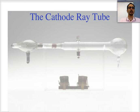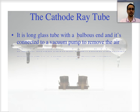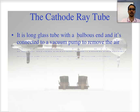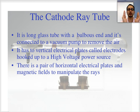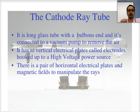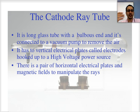The cathode ray tube is just a long piece of glass tube connected to a vacuum pump to remove all the air inside. It has a bulbous end that goes wider, so you have space to see what's happening. It has electrical plates that are vertical, called electrodes, which produce the cathode rays when connected to a high voltage power source. There are also horizontal electrical plates further along in the tube, and some magnets to explore the nature of the rays.